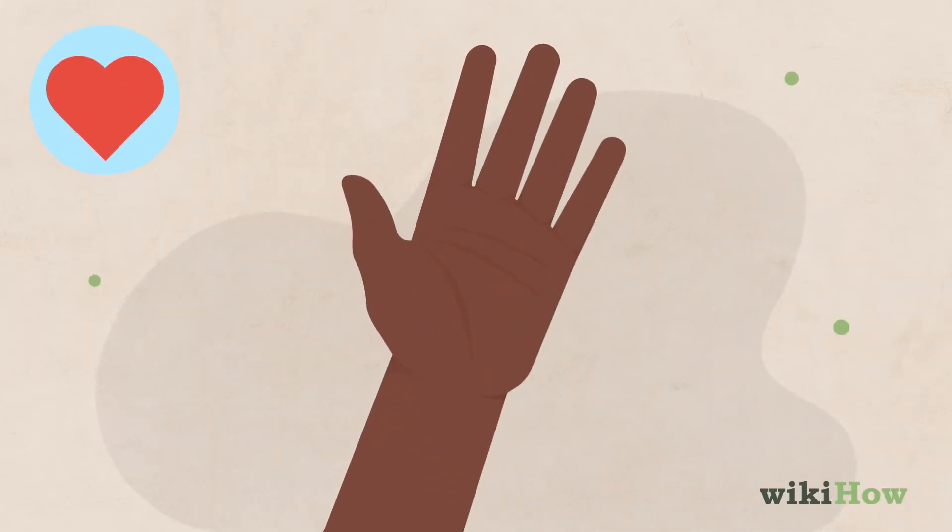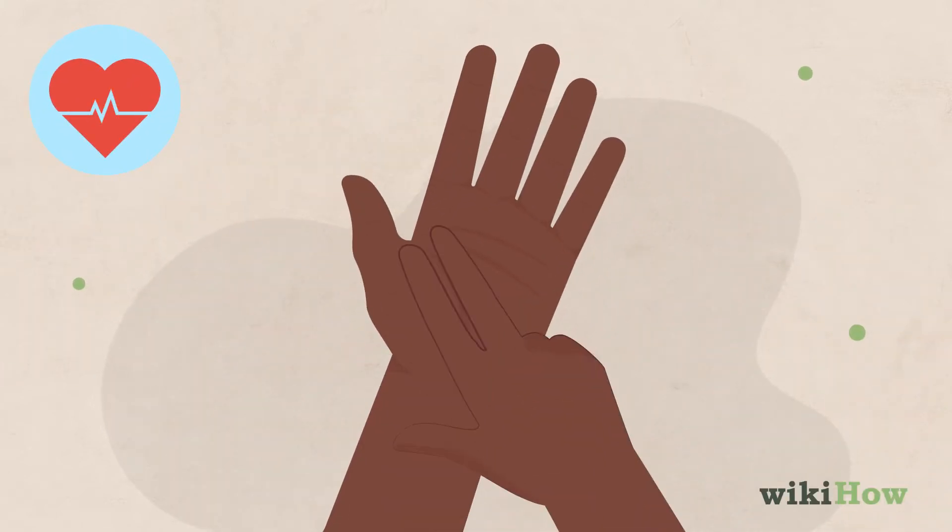first, take your resting heart rate by placing two fingers on the artery between the center of your palm and your thumb.